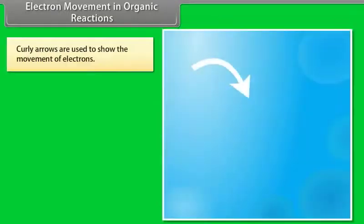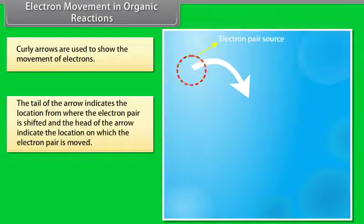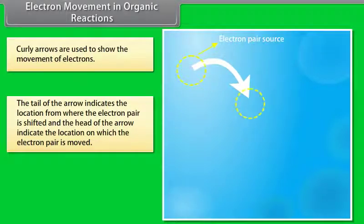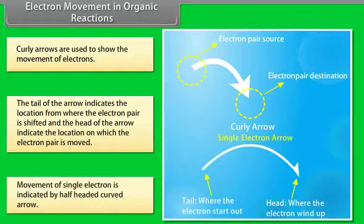Curly arrows are used to show the movement of electrons. The tail of the arrow indicates the location from where the electron pair is shifted, and the head of the arrow indicates the location to which the electron pair is moved. Movement of a single electron is indicated by a half-headed curved arrow.